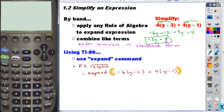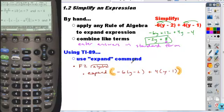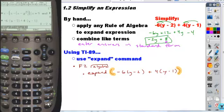Now, what happens if I don't put the Expand command on this? So, what if I just type in what I have? So, negative 6 times the quantity y minus 2, close parentheses, plus 4 times the quantity y minus 1. And then I close this off. And notice I get 8 minus 2y. Is that the same thing as negative 2y plus 8? Yeah.